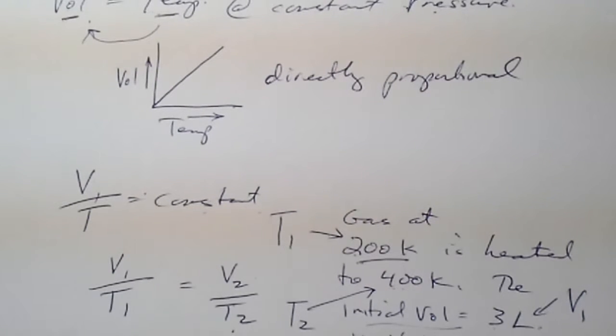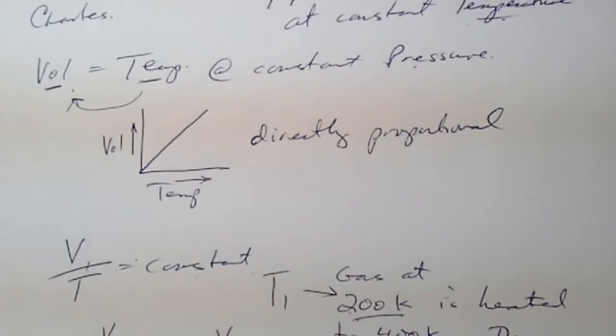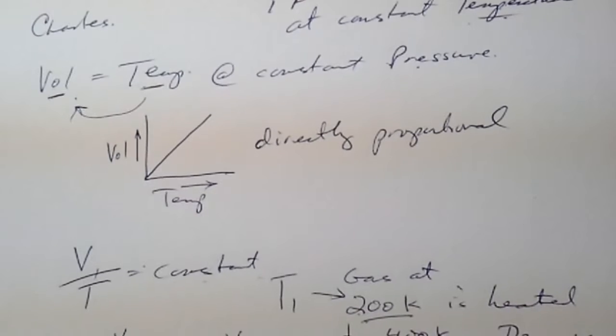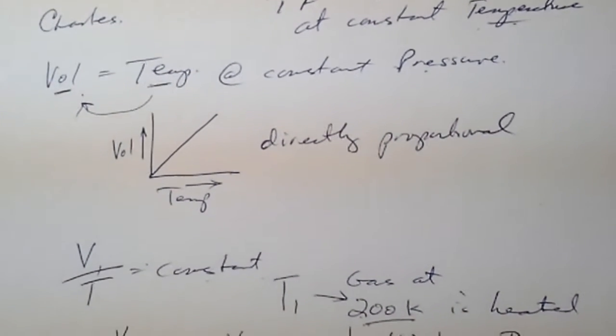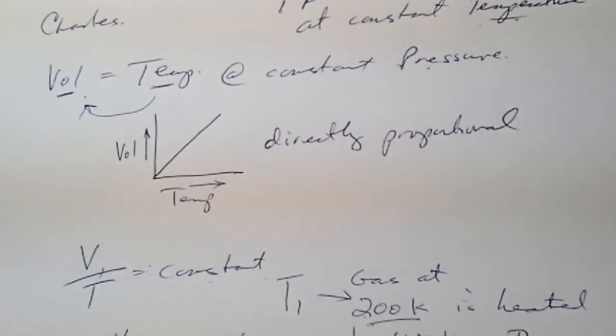We can combine these laws. It may become useful if we are looking at a system in which we have current values of temperature, volume, and pressure, and we want to know what the new system values are.